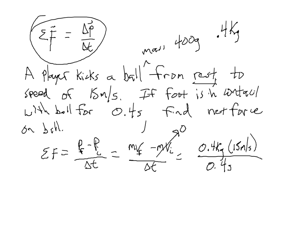The two 0.4's cancel, and we get that the sum of forces equals 15 kilogram meters per second squared. A kilogram meter per second squared is the same as a newton, so the average net force on the ball during the 0.4 seconds is 15 newtons.